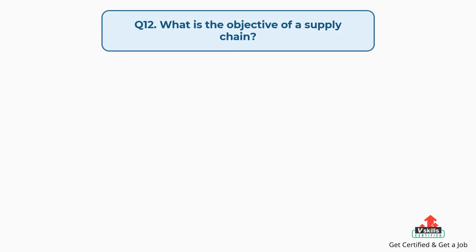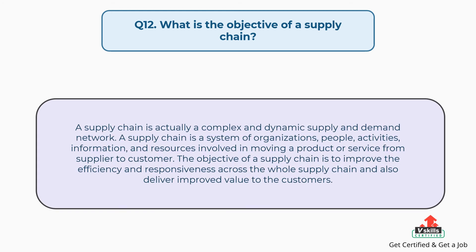Question number twelve: what is the objective of a supply chain? The answer is a supply chain is actually a complex and dynamic supply and demand network. A supply chain is a system of organizations, people, activities, information, and resources involved in moving a product or service from supplier to customer. The objective of a supply chain is to improve the efficiency and responsiveness across the whole supply chain and also deliver improved value to the customers.